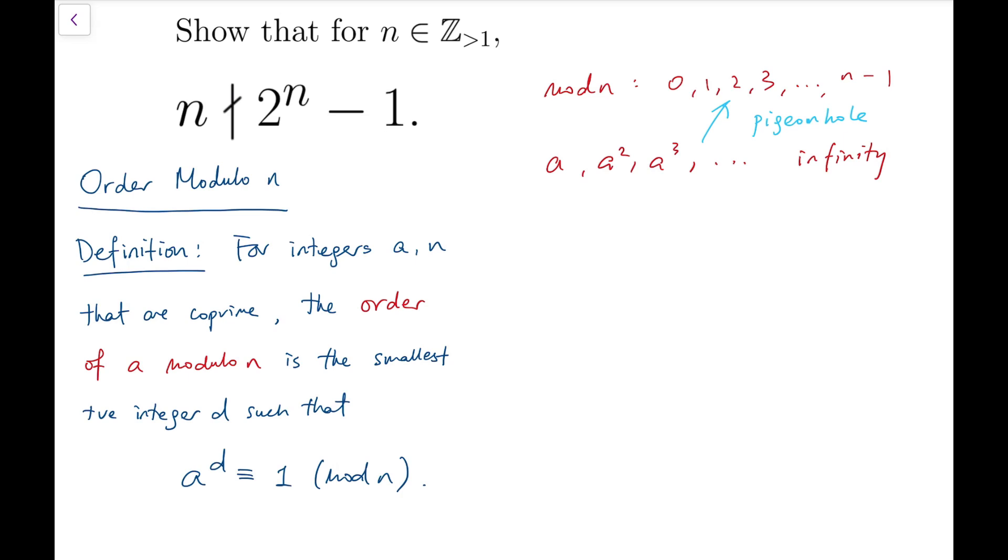there is always some powers that are going to repeat for the outcome. So we can always find two powers, say a to the power x, a to the power y, where x, y are positive integers, such that when we do mod n, they are actually congruent.